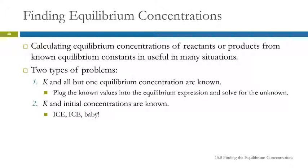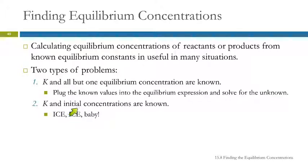There are two types of problems we'll see here. The first is where we know the equilibrium constant and all but one of the equilibrium concentrations — we just plug the known values into the equilibrium expression and solve for the missing piece. The other type is where we have the equilibrium constant and the initial concentrations, and we want to find the equilibrium concentrations. This is where we use ICE tables.